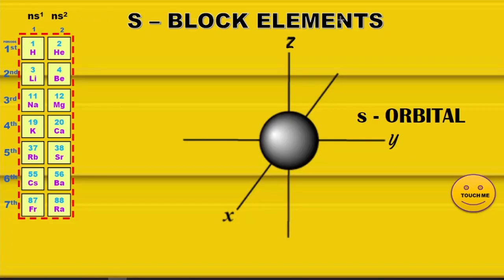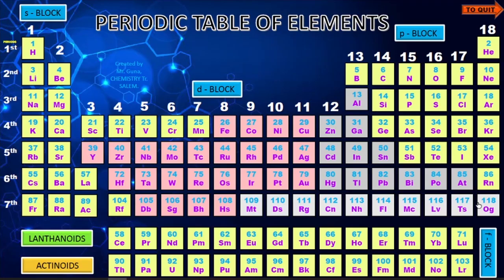If you click the S block button, it takes you to that block of elements — the ns1 first group and ns2 second group — explaining why they are called S block elements. All those details are given. Click 'Touch Me' again and you are taken back to the main periodic table.